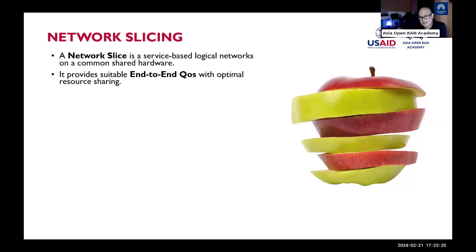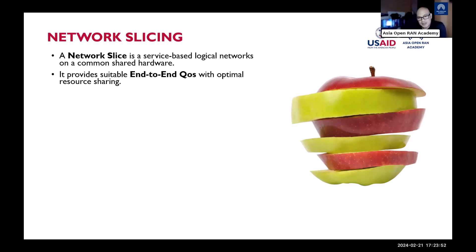Think of the frequency spectrum as a road like EDSA. Just as an ambulance gets priority in traffic because it has a higher quality of service, network slicing works similarly — it prioritizes traffic based on the type of service being used. It depends on the service type you are utilizing in the network.